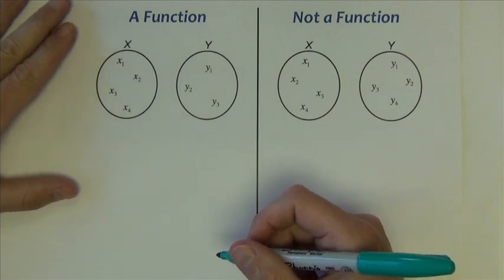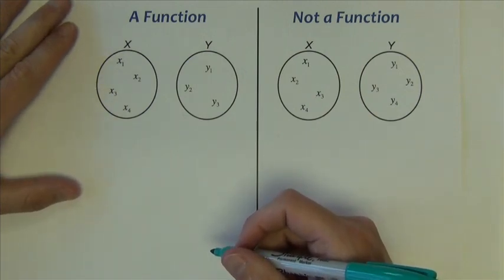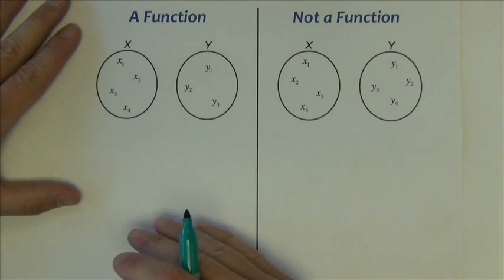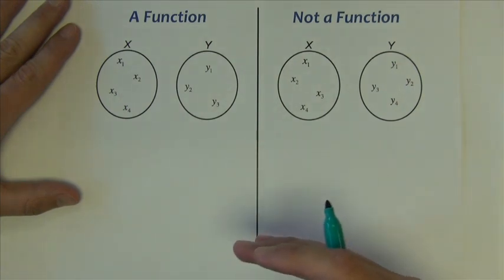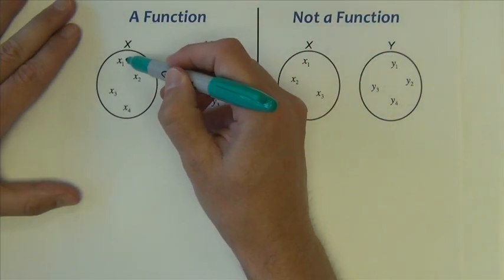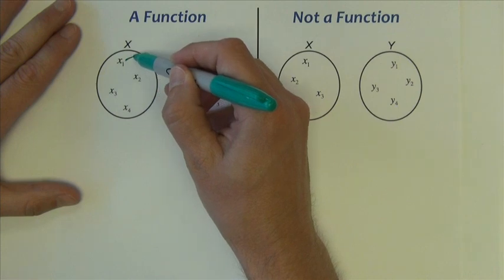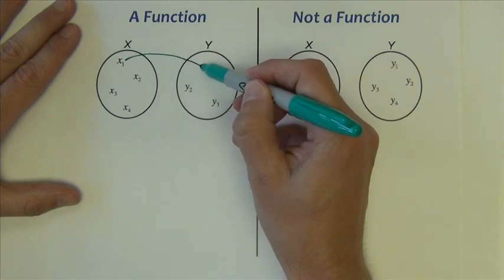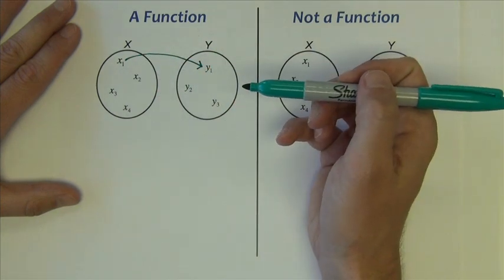So how about we look at a mapping diagram of a function and not a function, just to kind of compare and contrast the differences between the two. So let's say over here, the example that is a function, let's say that this x value maps to that y value.